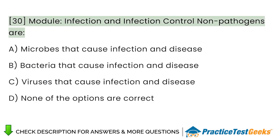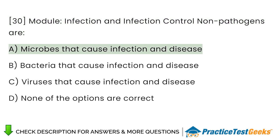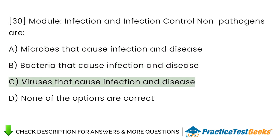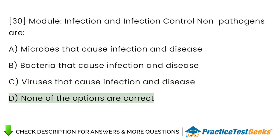Module: Infection and Infection Control. Non-pathogens are: A. Microbes that cause infection and disease. B. Bacteria that cause infection and disease. C. Viruses that cause infection and disease. D. None of the options are correct.